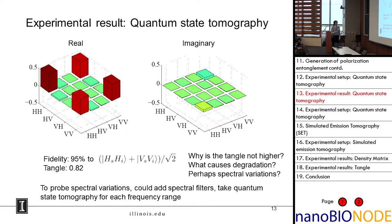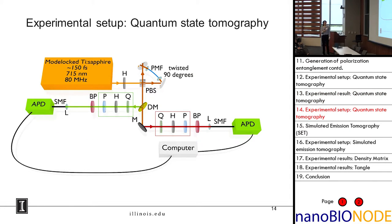To probe the spectral variations, one thing you could do is add filters that look at very narrow spectral bands of your photons and take a quantum state tomography for each frequency range. That would correspond to adding spectral filters in the arms here and collecting photons at only certain frequencies. But that's actually going to take a really long time. Already just for one quantum state tomography, it takes about 15 minutes. If you want a high resolution scan over all frequencies - say 0.1 nanometers over 10 nanometers - that's going to be a very, very long experiment. Over that amount of time, you're going to have changes in your setup.